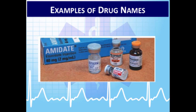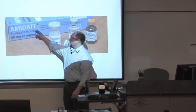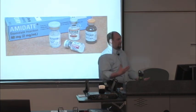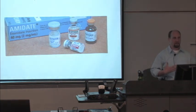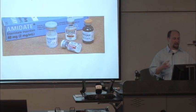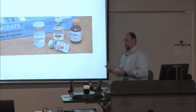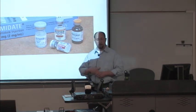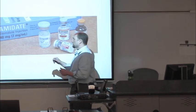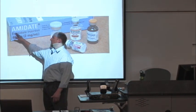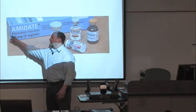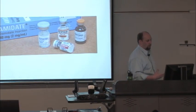If a drug is approved, it's pushed forward into drug delivery and made available for the general public. Each specific drug has not only a brand name but a generic name too. Amidate is the brand name — you'll see brand-named products listed both as brand and generic. Brand names are always capitalized, like Vicodin with a capital V, or Norco with a capital N. Generic names are lowercase.